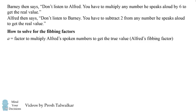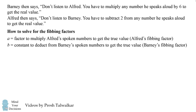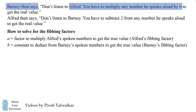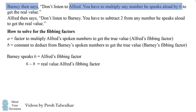Let's suppose that A is the factor to multiply Alfred's spoken numbers to get the true value — this is Alfred's fibbing factor. And let's say B is the constant to deduct from Barney's spoken numbers to get the true value, or Barney's fibbing factor. Now Barney says that Alfred's fibbing factor is six. So Barney speaks six equals Alfred's fibbing factor. We have to adjust the number six by Barney's fibbing factor, so six minus B is the real value of Alfred's fibbing factor, which equals A. So we have six minus B is equal to A.